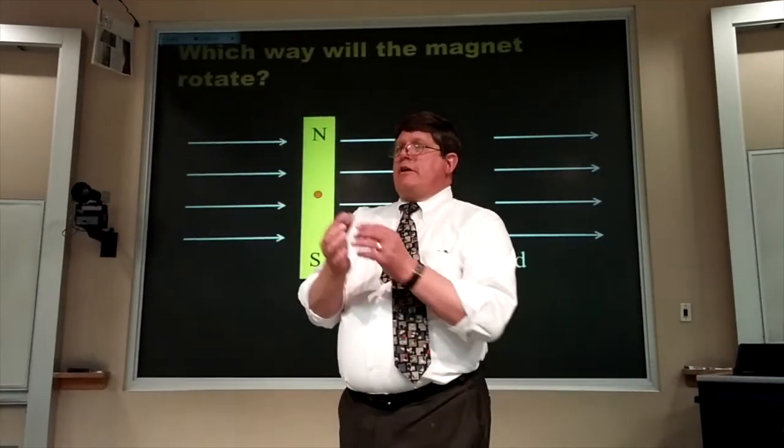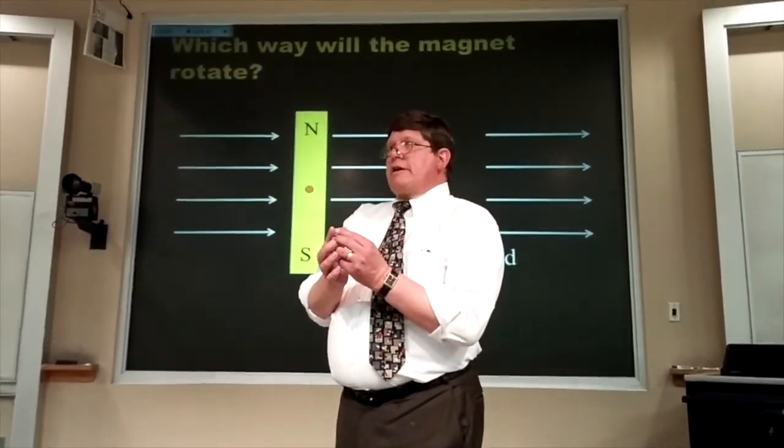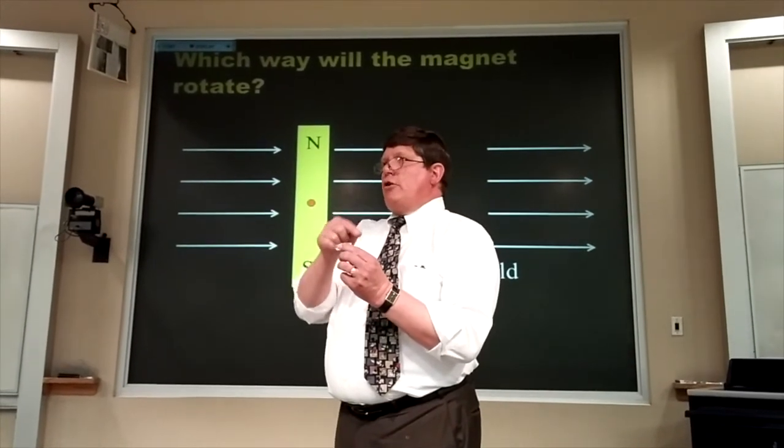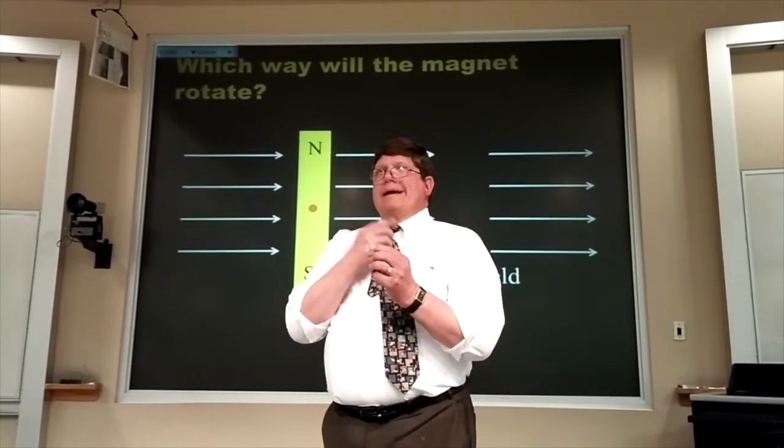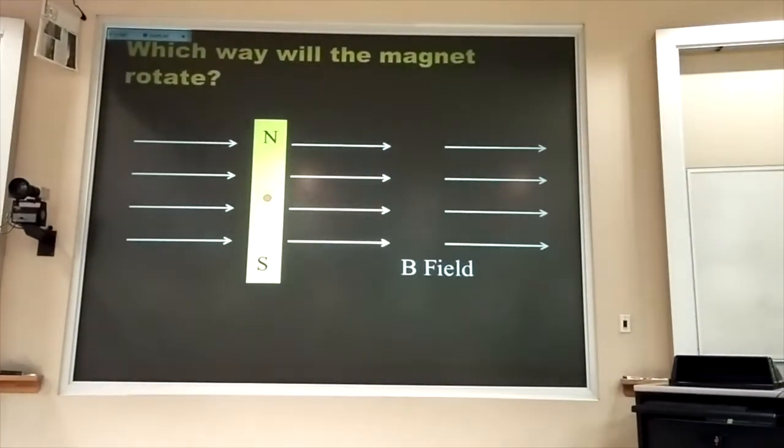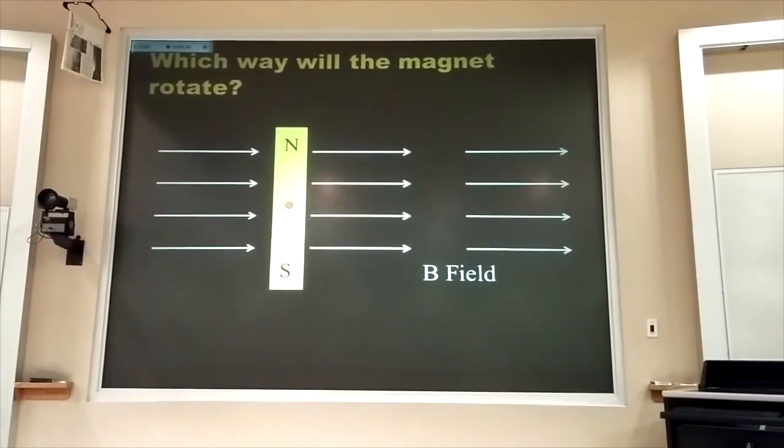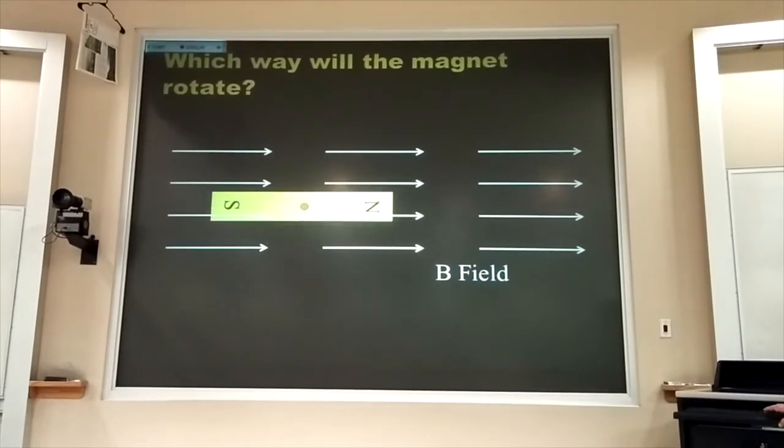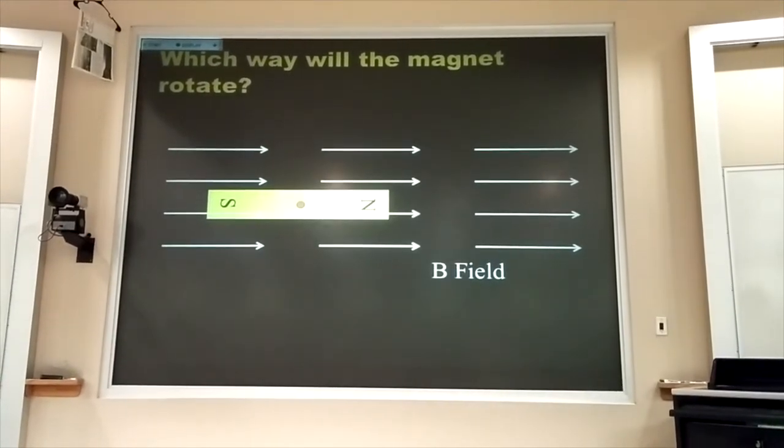The compass needle - the part of the compass needle that has the arrow head - is the north-seeking part of the compass needle. It is the part that's labeled N, and so this thing would rotate clockwise a quarter turn.